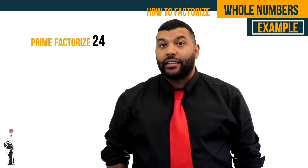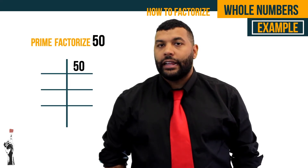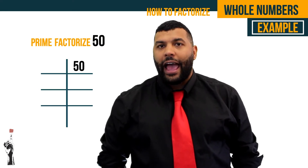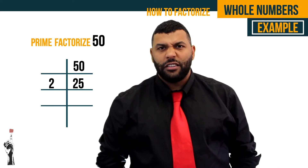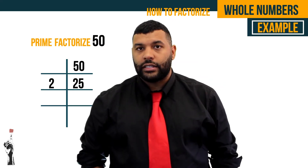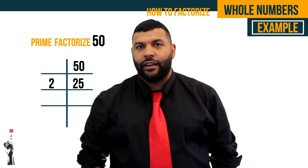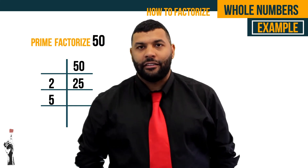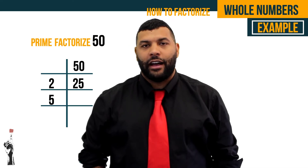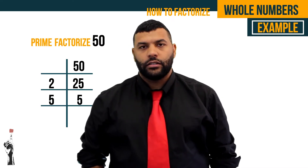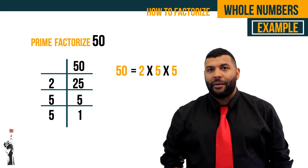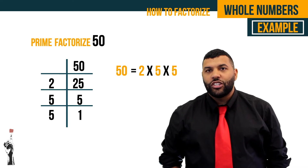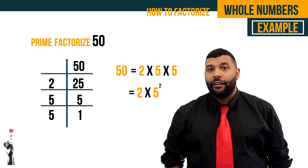Let's try another example. Let's prime factorize 50. First we place 50 in a ladder. We divide 50 by the smallest prime number, 2, to give us 25. 25 cannot divide by 2, so we move on to 3. 25 still cannot be divided by 3, so we move on to the next prime number, 5. 25 divided by 5 gives us 5, and 5 divided by 5 gives us 1. So 50 is written as 2 multiplied by 5 multiplied by 5, or 2 multiplied by 5 to the power of 2.